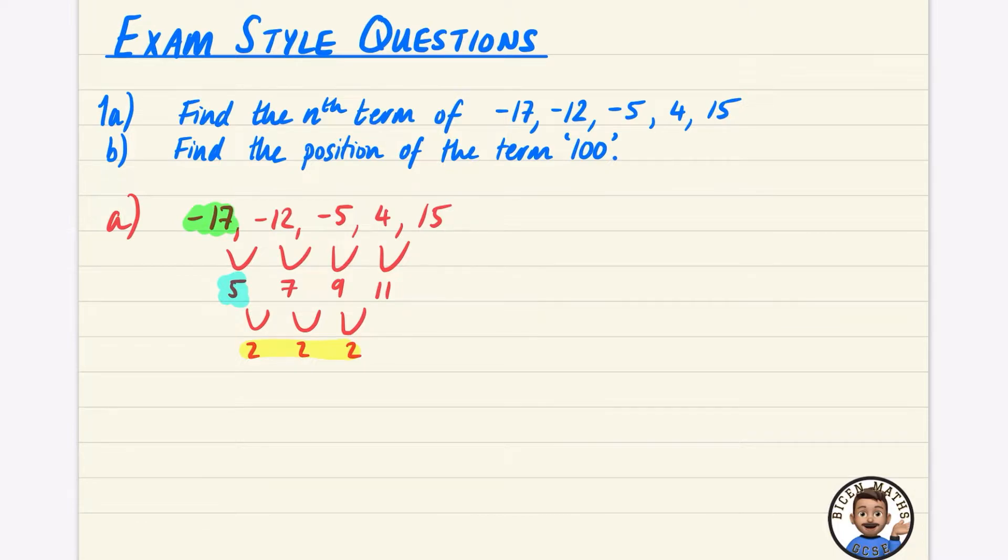My second difference 2a is equal to 2, which means a is equal to 1. My first difference, which is 3a plus b, is equal to 5. That's the blue part. That's going to be 3 times 1, which is 3 plus b equals 5, so b is equal to 2.